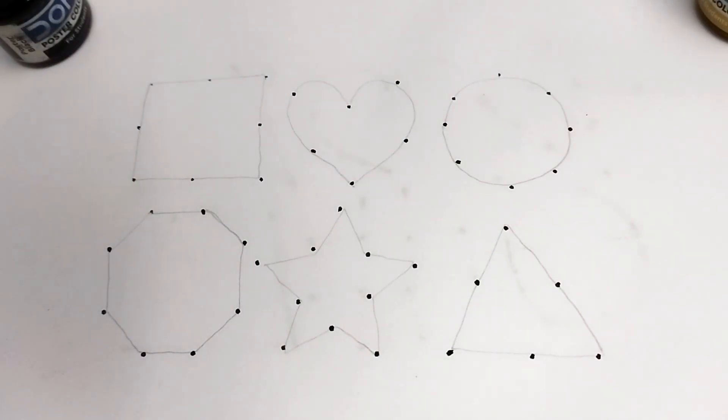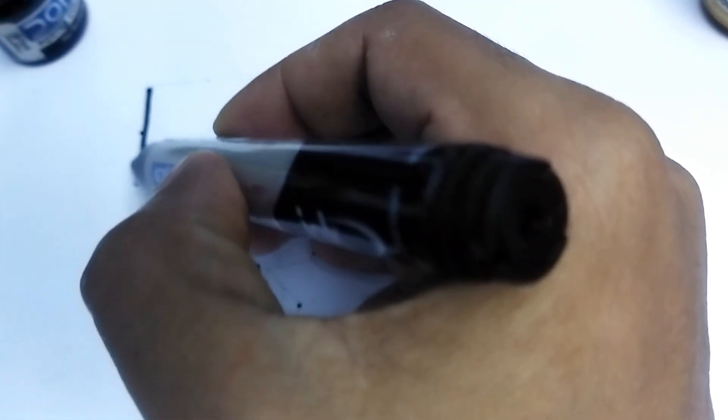Hello kids, how are you? Today we will learn different types of shapes and different types of colors. Now I am adding the dots and creating the shapes. This is square.